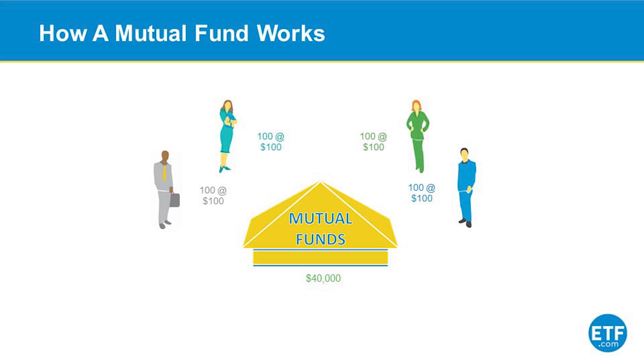Imagine that you and three of your friends want to put some money together to invest. You could all go do this individually and just open a brokerage account, but instead you decide to put your money together in a pool, and that pool is called a mutual fund. So let's say you each have $10,000, you put it in that pool, and you have a $40,000 pool.